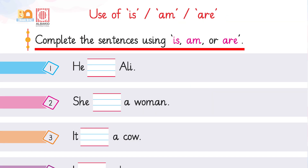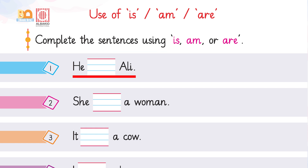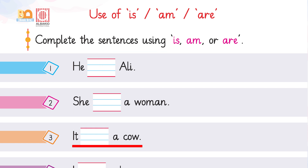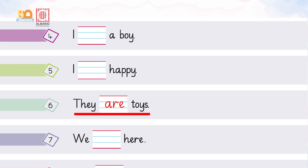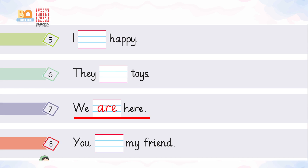It's time to complete the sentences using 'is', 'am', or 'are'. He is Ali. She is our ma'am. It is a cow. I am a boy. I am happy. They are twins. We are here. You are my friend.